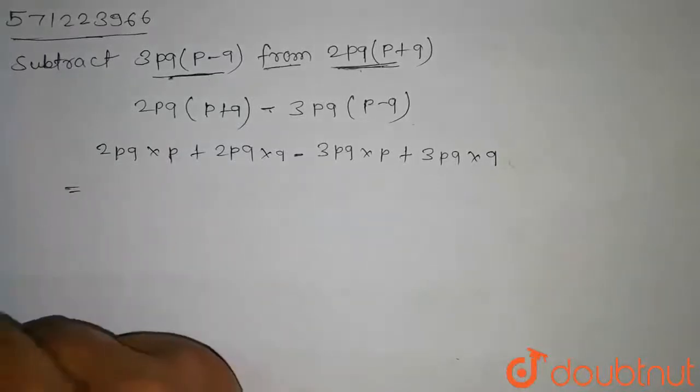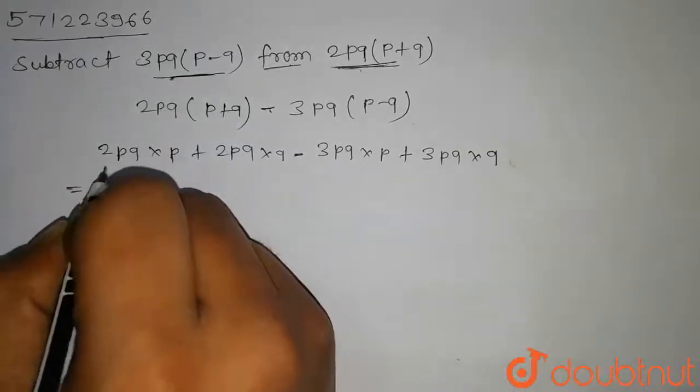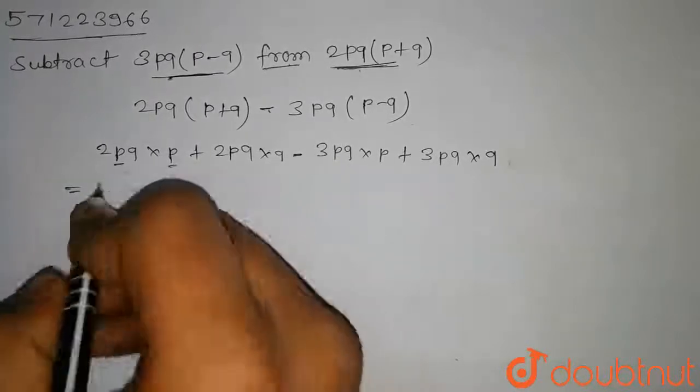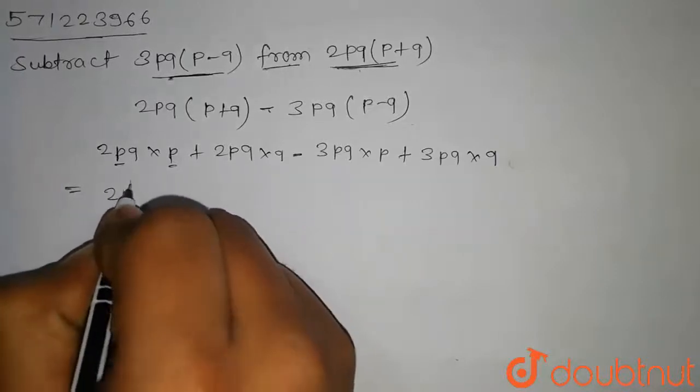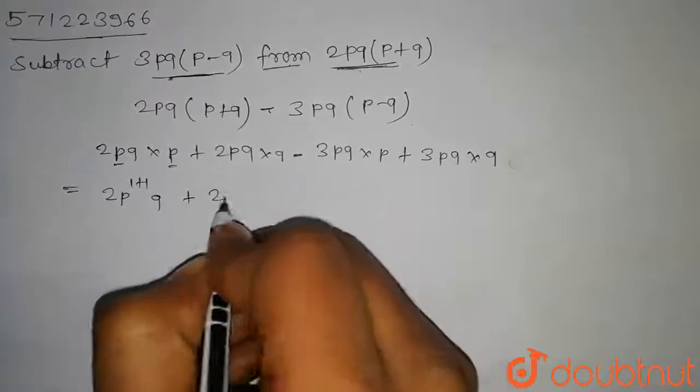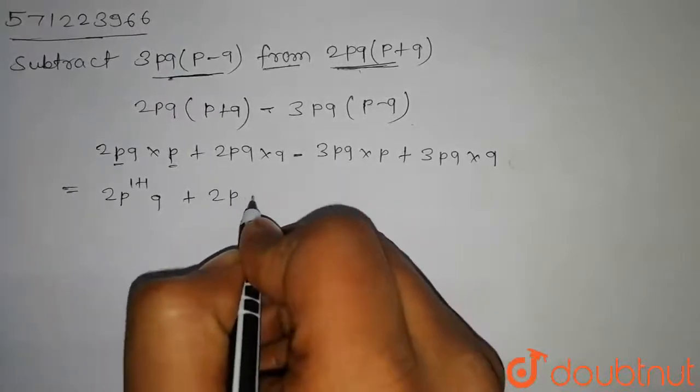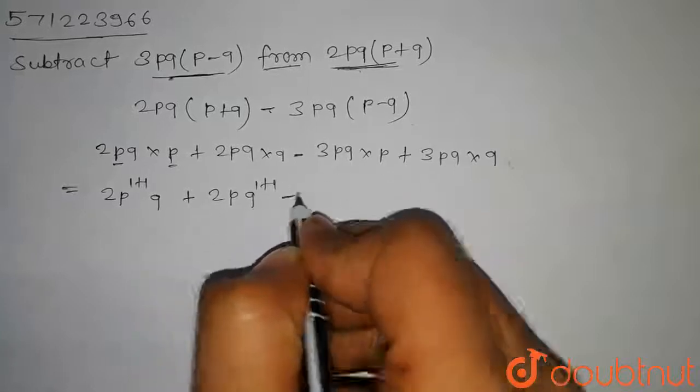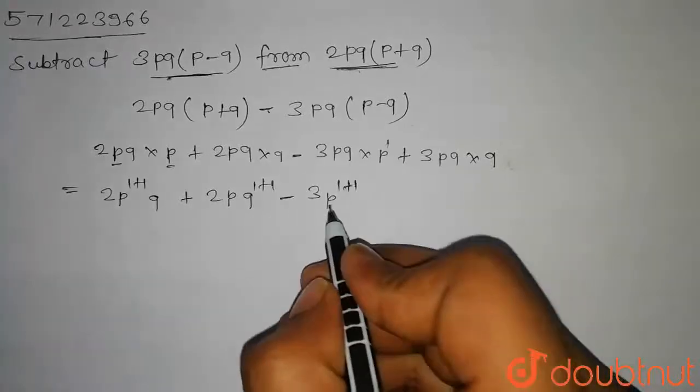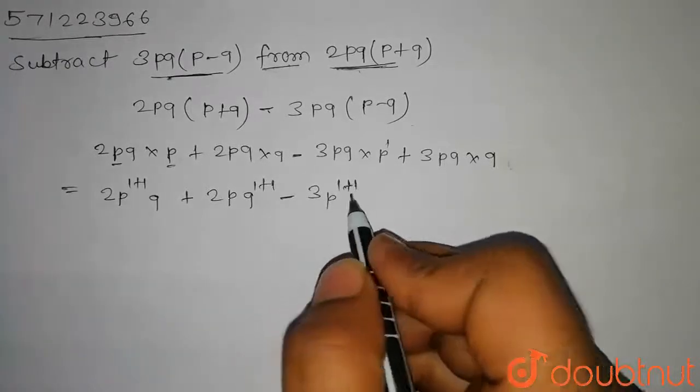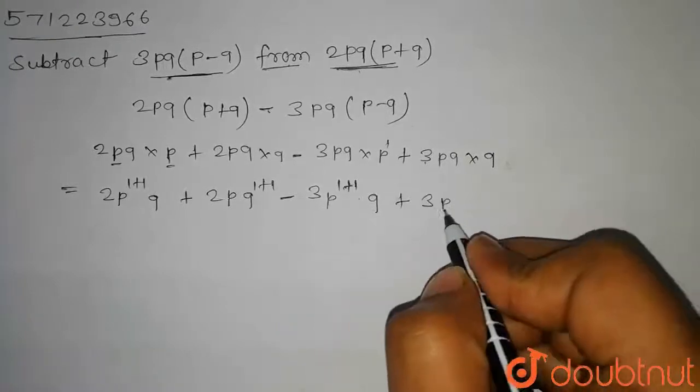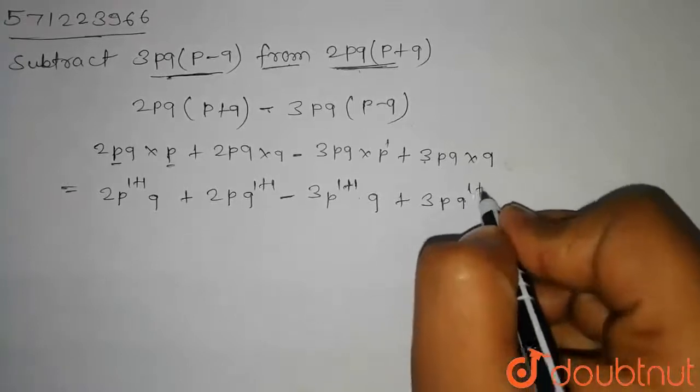We know that when the base is same, then power is added. So 2 into p to the power 1 plus 1 into q plus 2 into p into q to the power 1 plus 1 minus 3 into p to the power 1 plus 1 into q plus 3 into p into q to the power 1 plus 1.